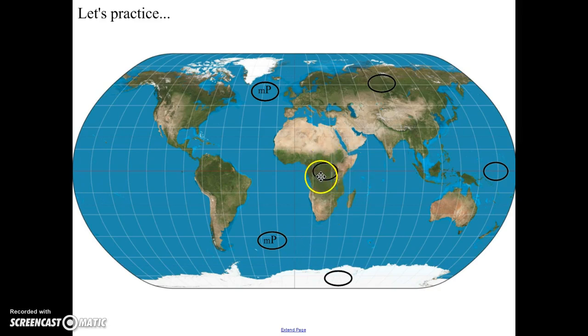How about this one in Africa? Well, it's on land, so it's going to be dry. So it'll be continental. And it's right on the equator, so it'll be warm. So continental tropical.